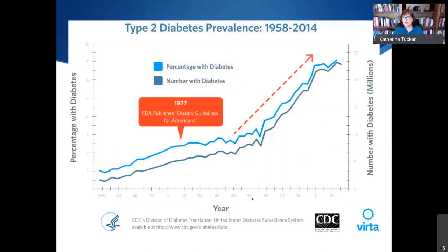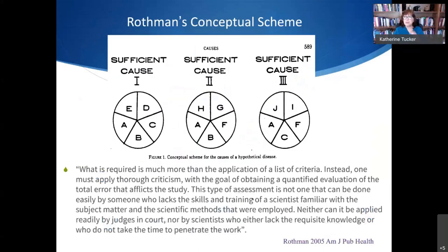Why do we care about obesity? We know it affects chronic disease. Diabetes in particular — you can see a huge uptake in the percentage of the population with diabetes, starting with steep growth around 1985 and 1990. Diabetes is a very serious illness that lasts your lifetime and has many terrible complications. Diet-related diseases are so prevalent and so important, but we struggle a lot with assessing diet and health because it's not as simple as asking do you smoke or not — everyone eats.